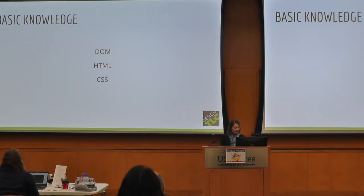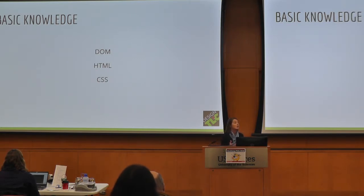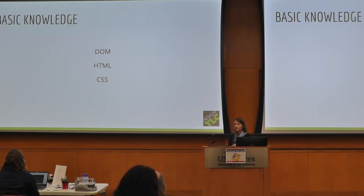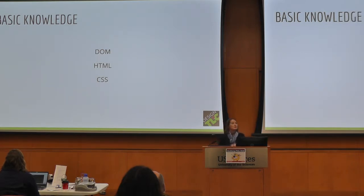So basic knowledge. Understanding what the DOM is — the Document Object Model is what it stands for, and it's basically the code on the page. If you ever right-click on a page and click View Source, that's the DOM. HTML is a coding language used to build the content on the page. And then CSS, which stands for Cascading Style Sheet, is the code used to define the styles — what we see on the front end of a website.